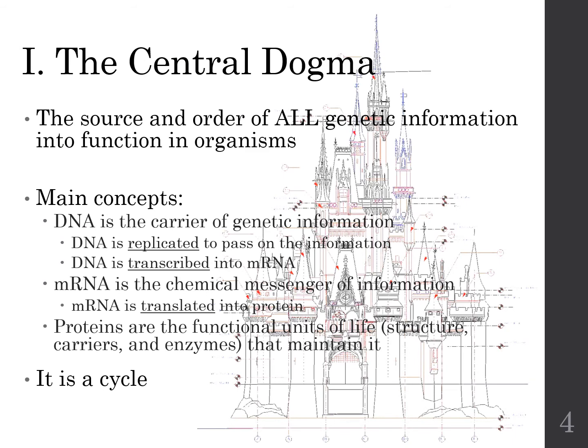The main idea of the central dogma is based on three components — DNA, RNA, and protein — and the three processes involved: replication, transcription, and translation. DNA acts like the blueprint, or the carrier of genetic information, which then needs to be decoded by a process called transcription into RNA — the decoded message that can be understood by ribosomes to produce protein. This puts together the entire concept of central dogma as the source and order of all genetic information, turning it into something functional.